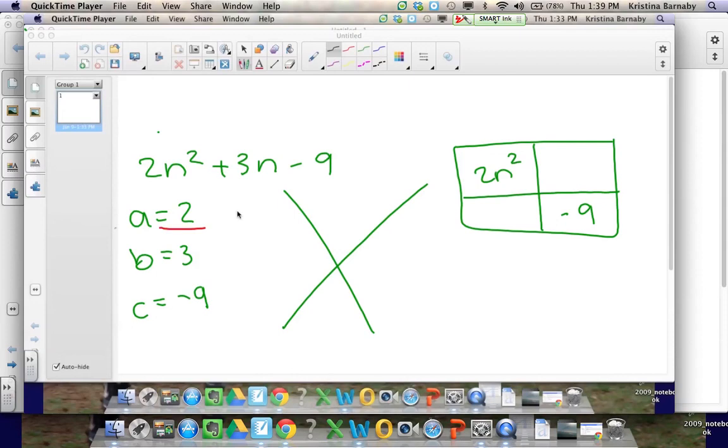The top of the X is the product of a and c, which is negative 18. And the bottom is 3.